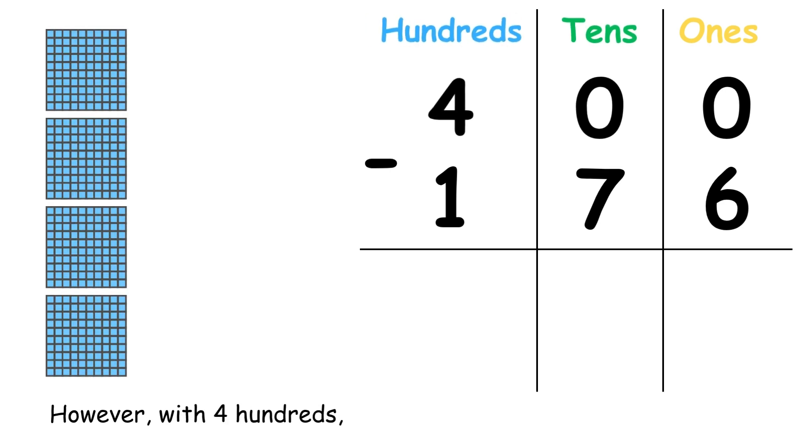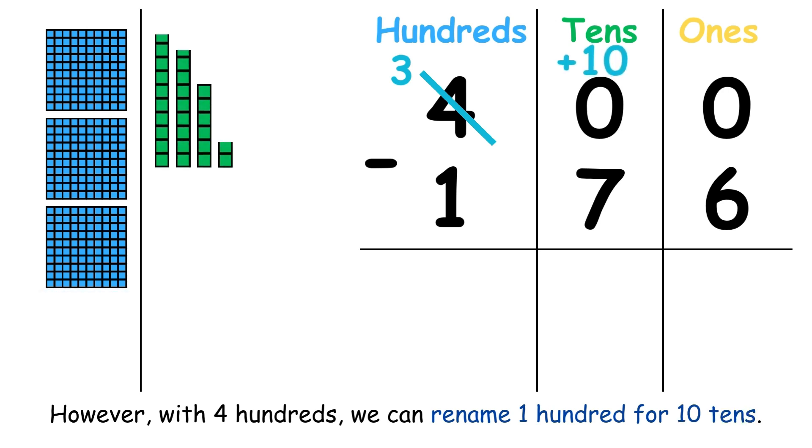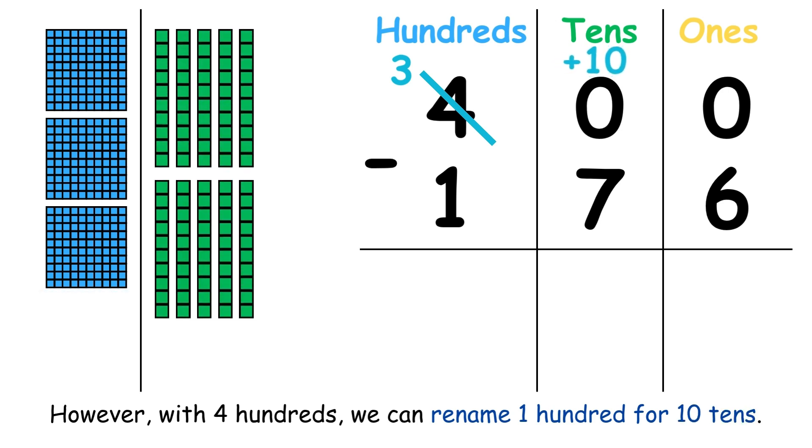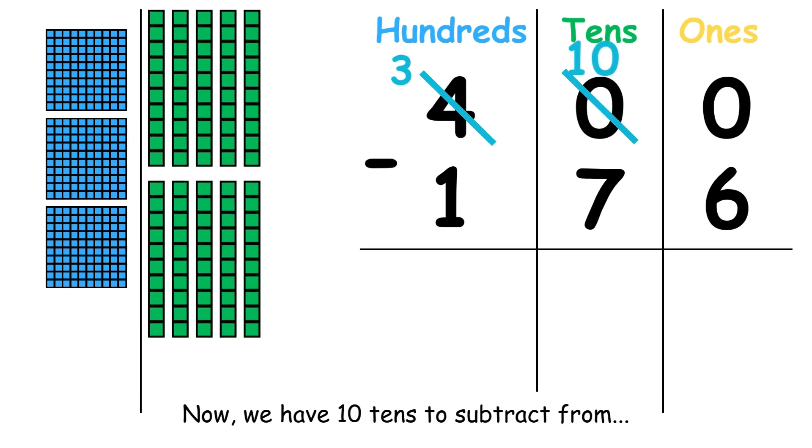However, with 4 hundreds, we can rename 1 hundred for 10 tens. Now we have 10 tens to subtract from.